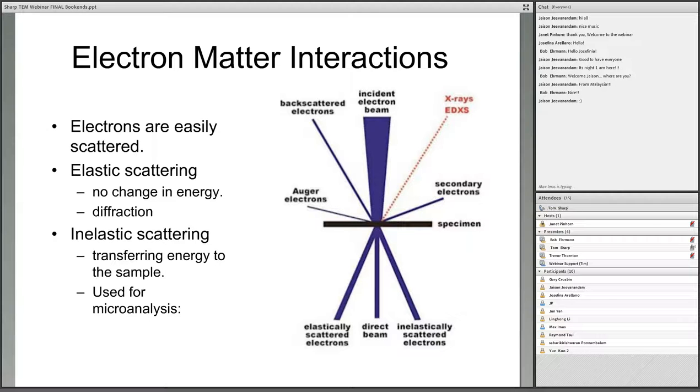There's also inelastic scattering, where the electrons lose some energy by promoting some sort of transition within the structure. Those electrons that lose energy are also passed through the sample, and we can use those to evaluate the chemistry of the material through a technique called electron energy loss spectroscopy. If those inelastic interactions knock core electrons out of the atoms, the recovery process produces x-rays, and we can collect those x-rays in EDS spectra. We also have Auger electrons from the very surface atoms, secondary electrons also surface sensitive, and backscatter electrons.